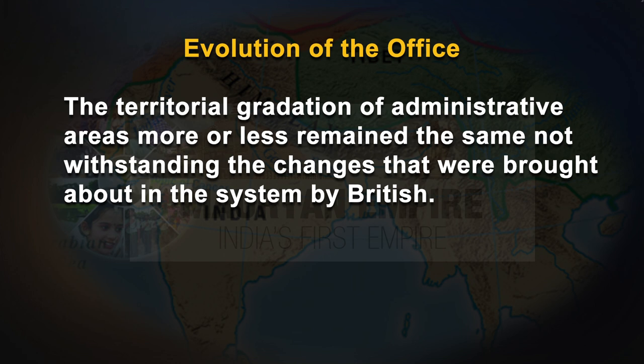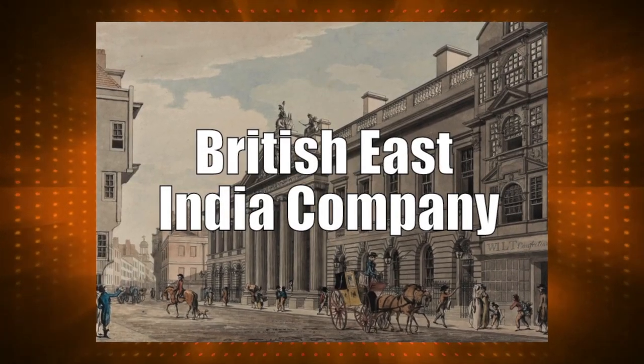These revenue officials were generally invested with several powers and functions. It was considered a feudal form of territorial organization. The territorial gradation of administrative areas more or less remained the same notwithstanding changes brought about by the British. The British built on the oriental system and established the present system of field administration. The creation of a district as a unit of administration and the appointment of the District Collector as head of district administration laid the foundations of stable administration in India. Granting of Diwani — that is, civil administration — in Bengal, Bihar and Odisha to the East India Company in 1765 marks the beginning of British revenue administration in India. In 1769, the company launched a scheme of English supervision over local revenue collecting institutions.